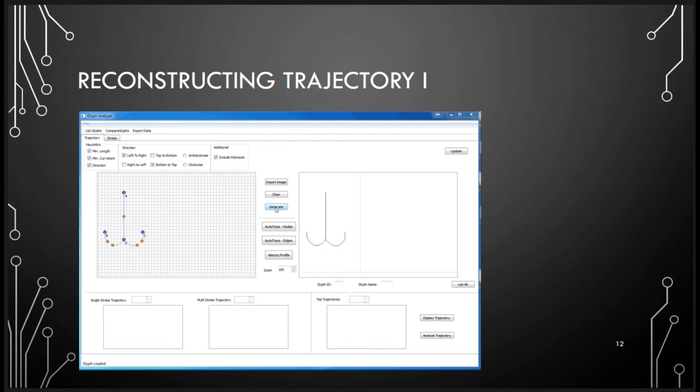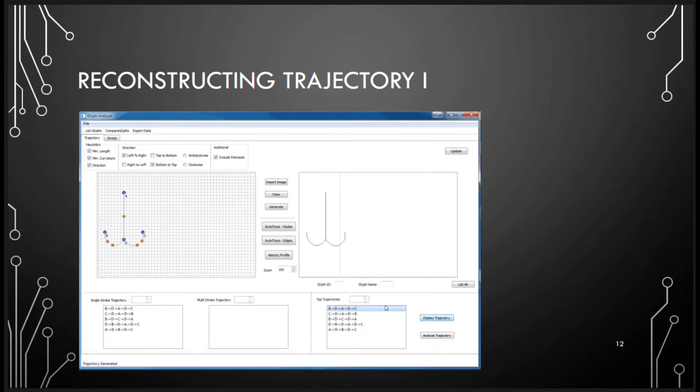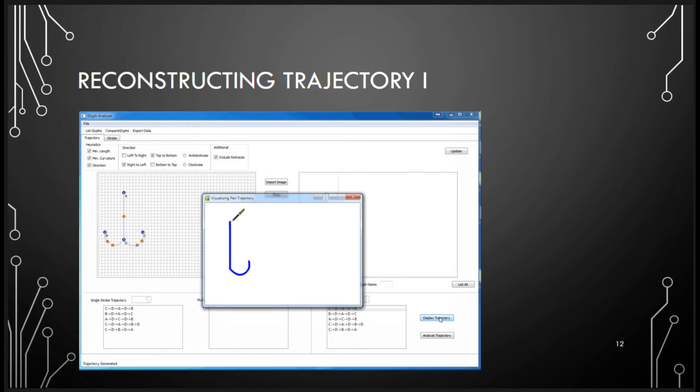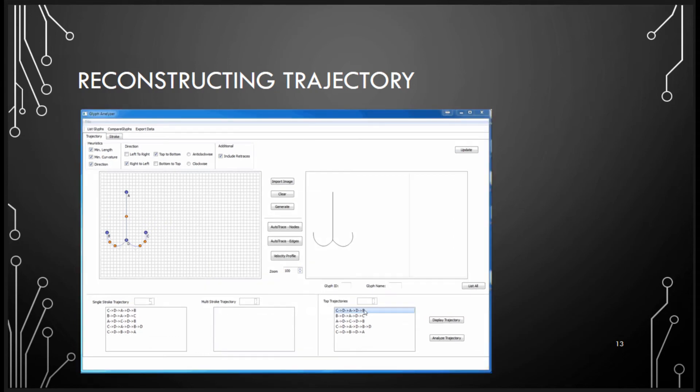So you have a system, there's a character. You try to generate the different ductus. It gives you five suggestions. You can visualize how the character is written. You can also change the heuristics and regenerate the ductus. It'll give you a different set of suggestions. And I can think, you know what, nothing makes sense at all. I want to give my own ductus. You can also do that. So I just give my own ductus for the system to analyze.